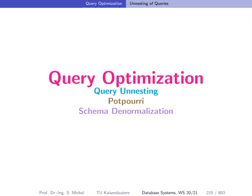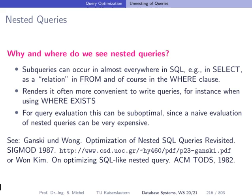In the following, we will look at different ways — additional ways — to accomplish query optimization. We will start with query unnesting.